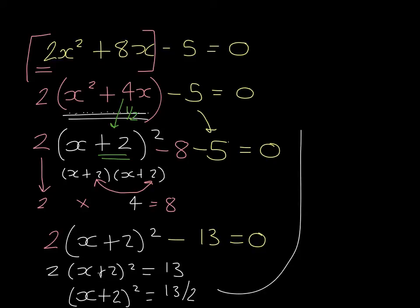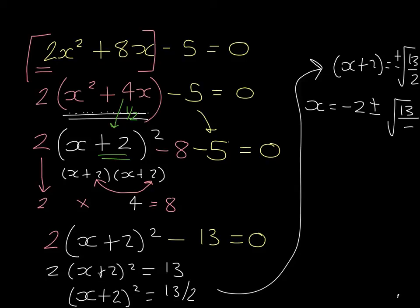I'm going to carry on up here. We then need to square root. So we have x plus 2 equals plus or minus root 13 over 2. And x then equals negative 2 plus or minus root 13 over 2.